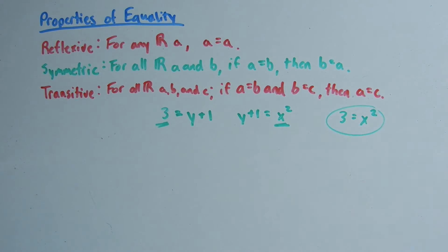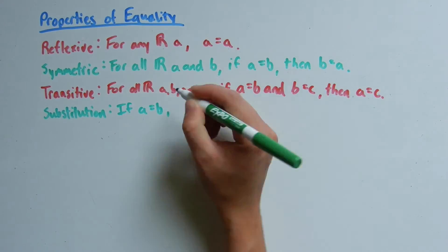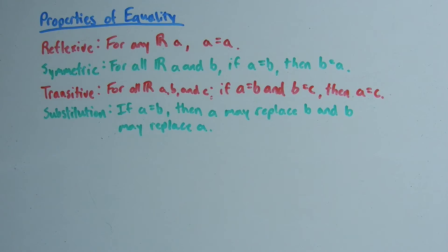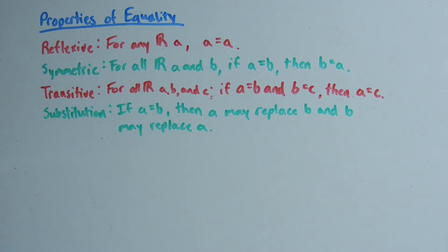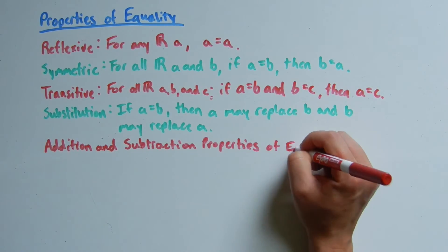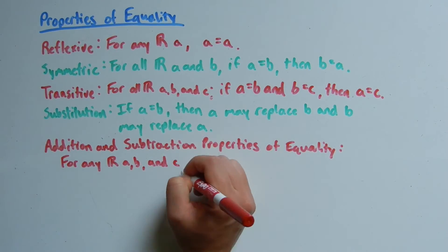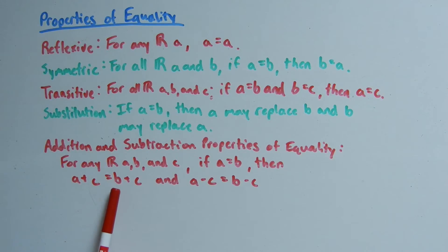We also have the substitution property, which basically says that if a is equal to b, then a may replace b and b may replace a. We also have addition and subtraction properties of equality, which say that for any real numbers a, b, and c, if a is equal to b, then a plus c equals b plus c, and a minus c equals b minus c.